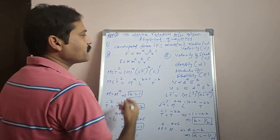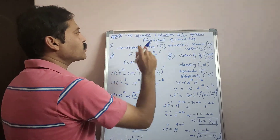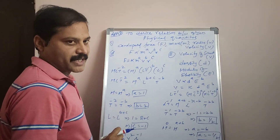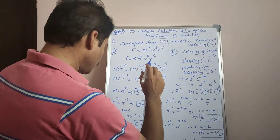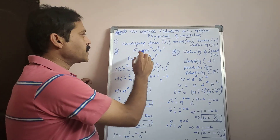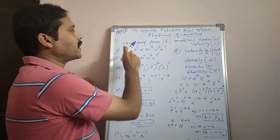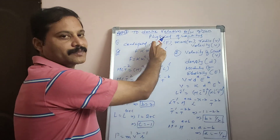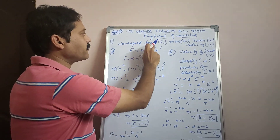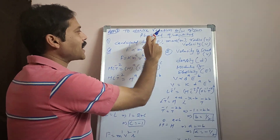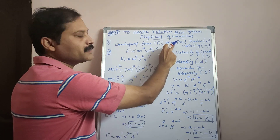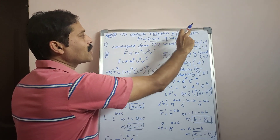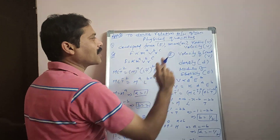You will be given some physical quantities and you have to derive the relation between them. The first example is: find the expression for centripetal force acting on a particle of mass M moving with velocity V along a circular path of radius small r.